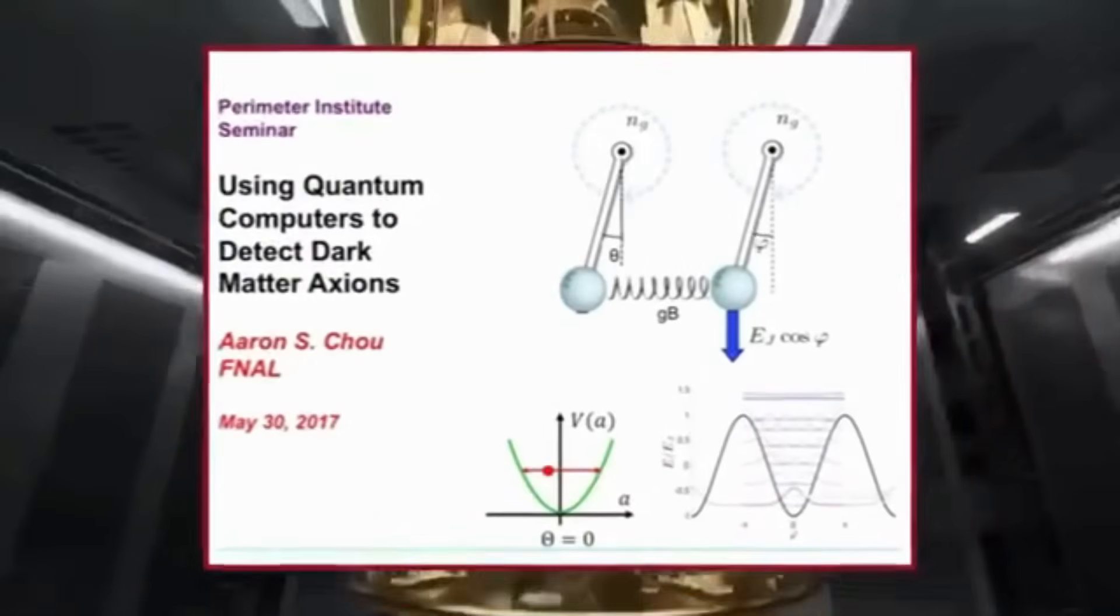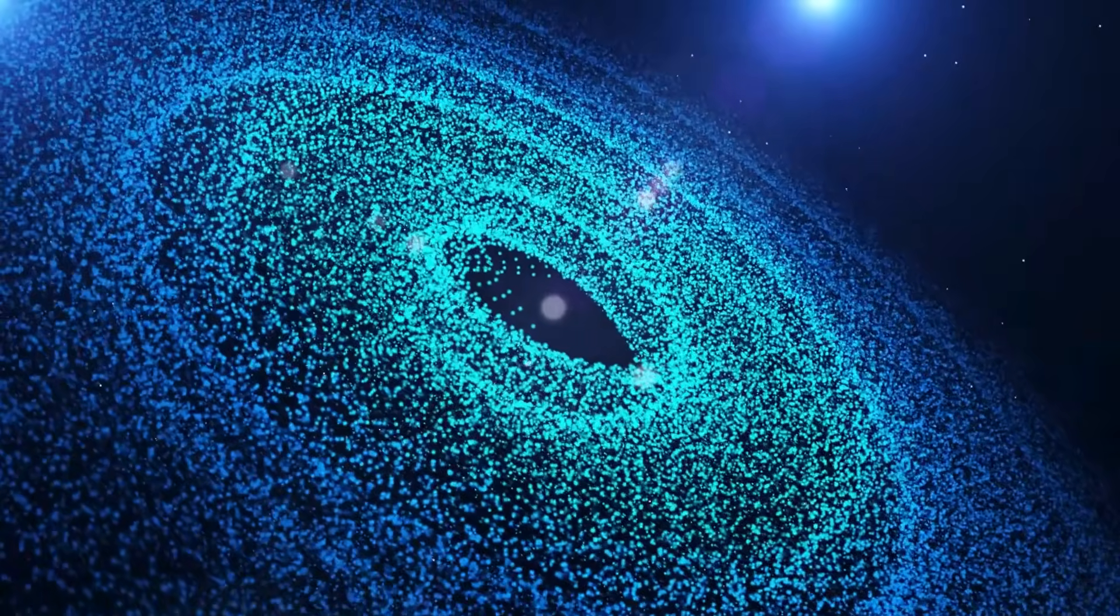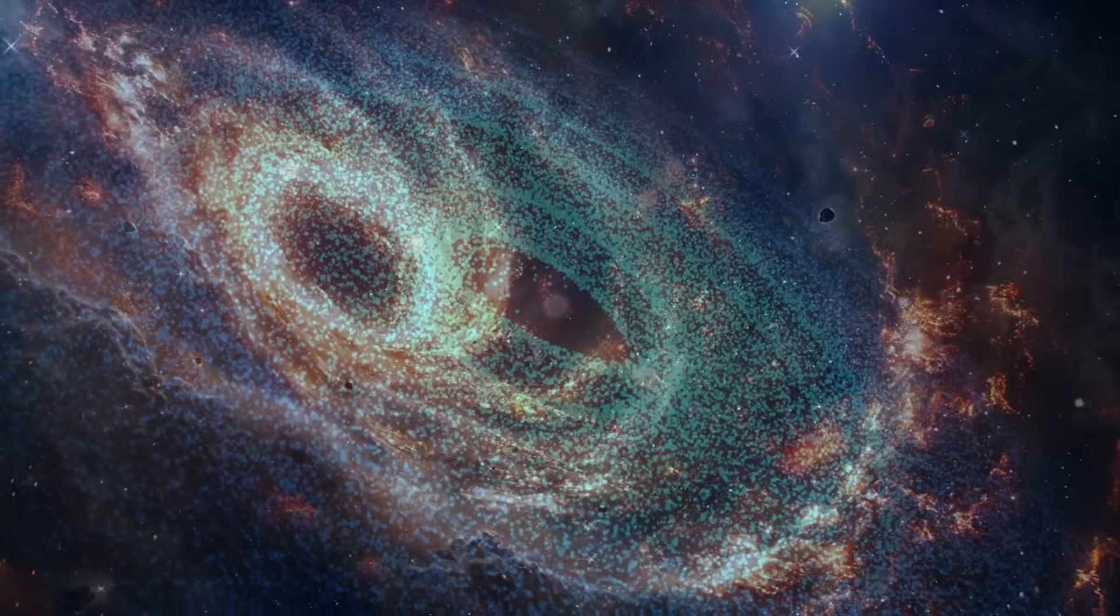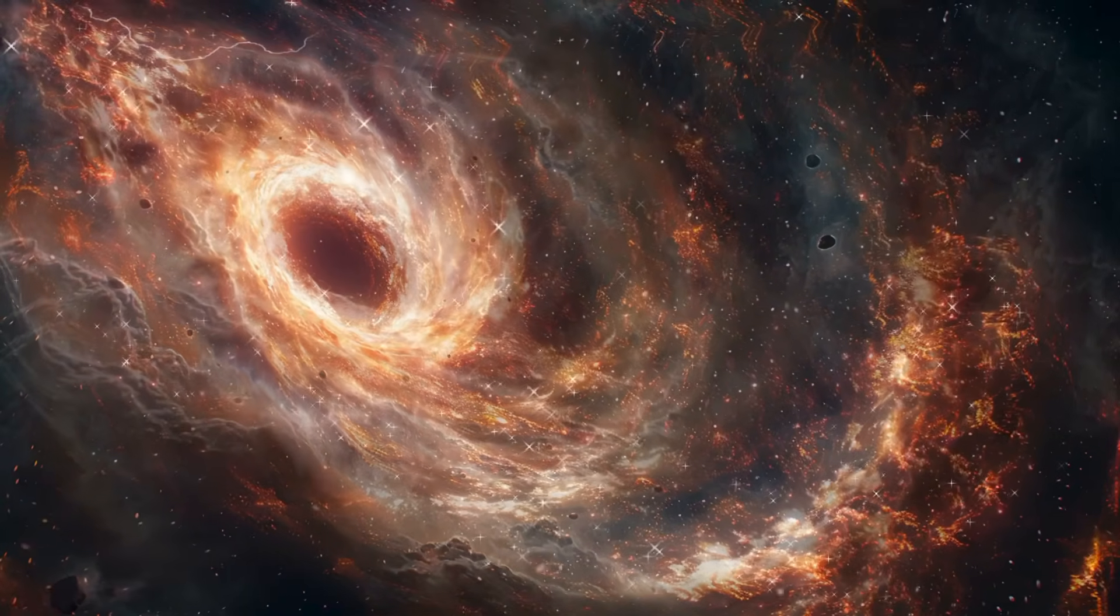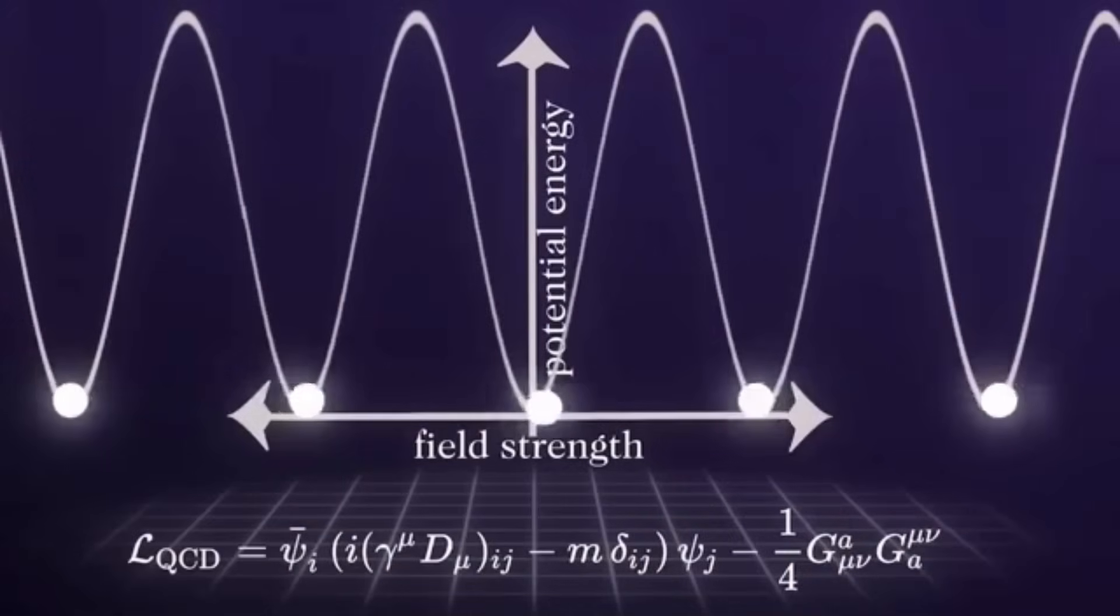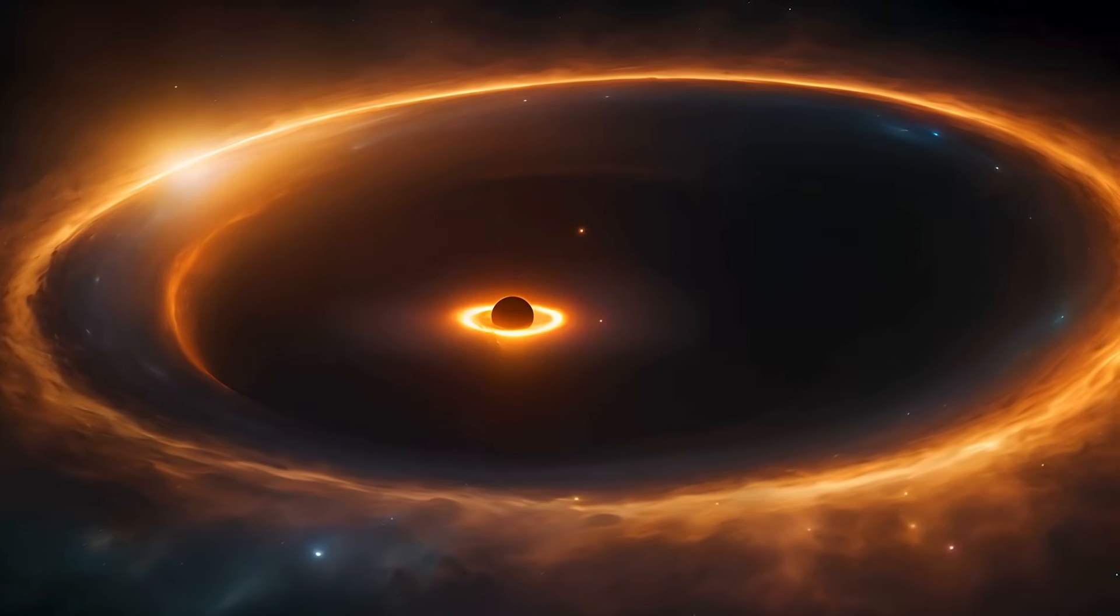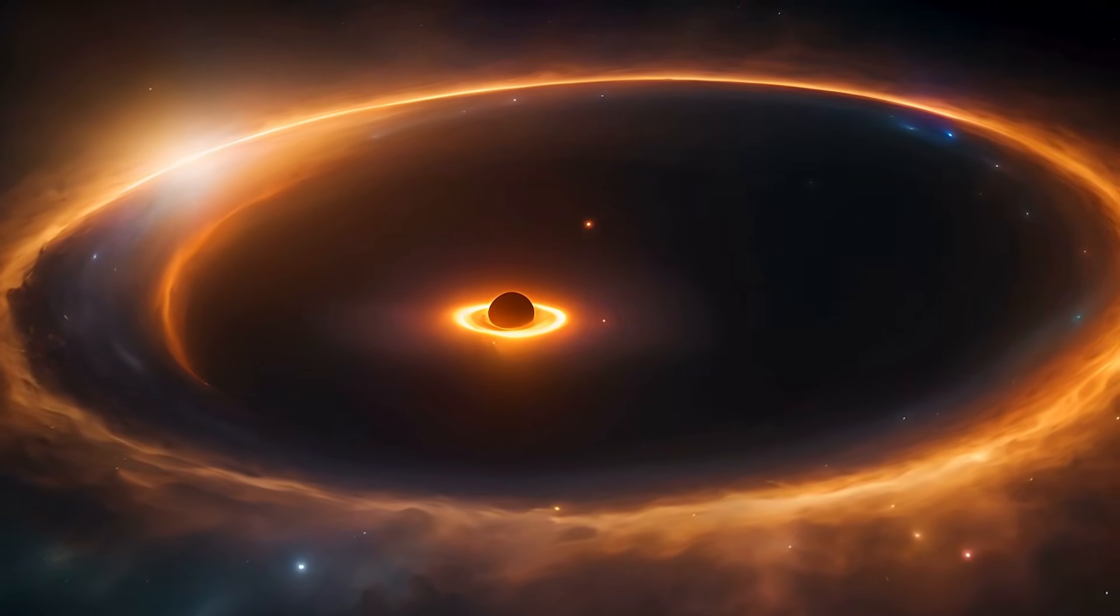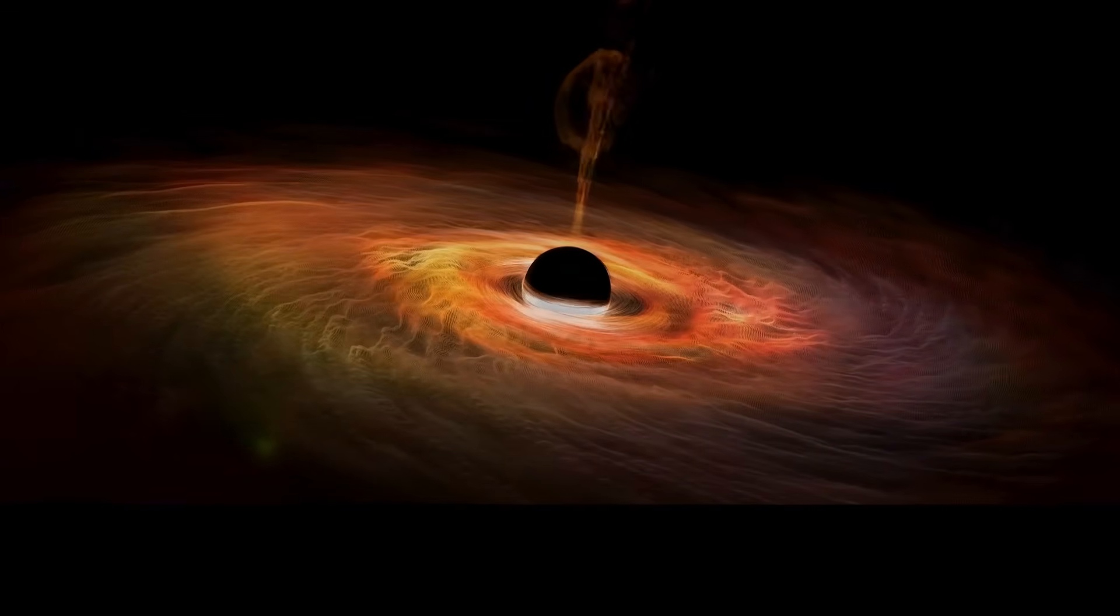And then, there's the strangest possibility of all. What if axions themselves are a form of quantum computation happening at a cosmic scale? Some radical theories propose that dark matter may function like an unknown information processing system, one that governs the evolution of the universe in ways we don't yet understand. If true, then quantum computing wouldn't just be a tool for detecting axions. It might be a way to communicate with the hidden architecture of the cosmos.